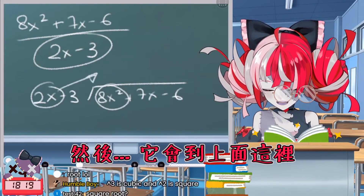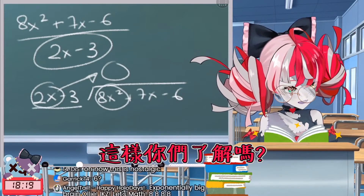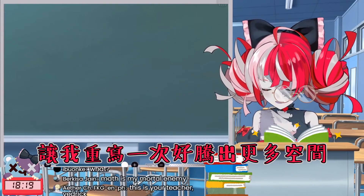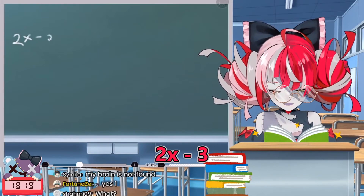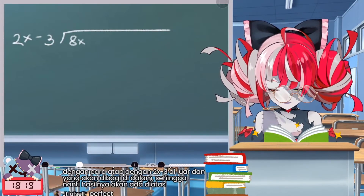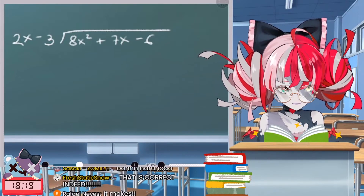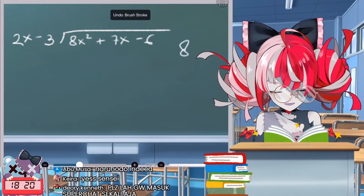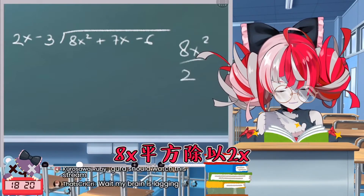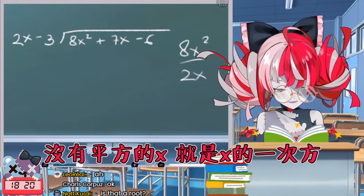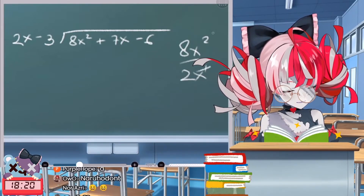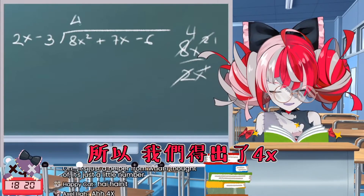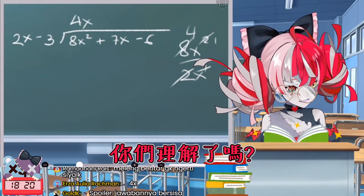With long division, this term gets divided by this one and the result goes on top. Then that result gets multiplied by the divisor. So eight x squared divided by two x — a non-squared x is basically x to the one — gives us 4x. So the first term of our answer is 4x.